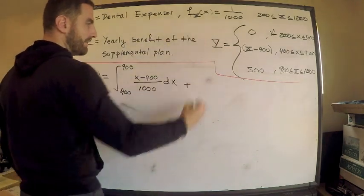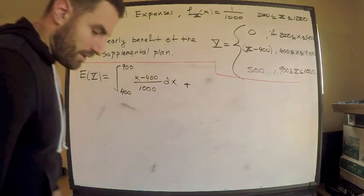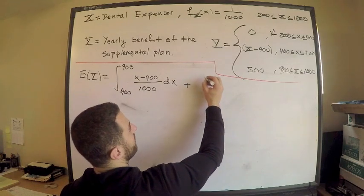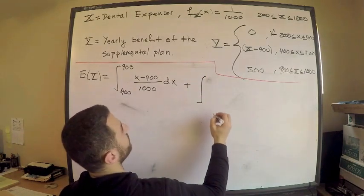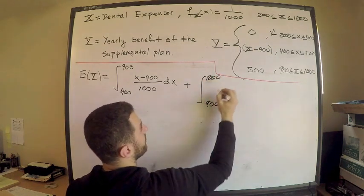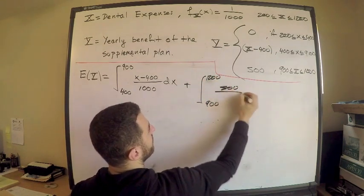I'm going to need to add that to what happens when the expenses exceed 900. So when they exceed 900, I'm going to pay 500, so I'm going to go from 900 to 1200, of 500 divided by 1000.